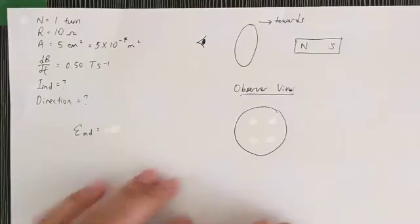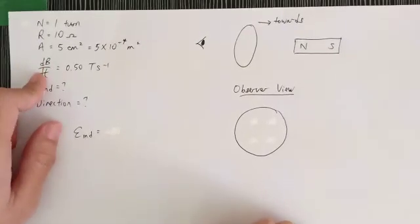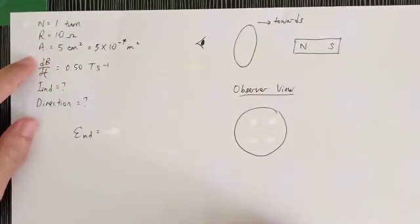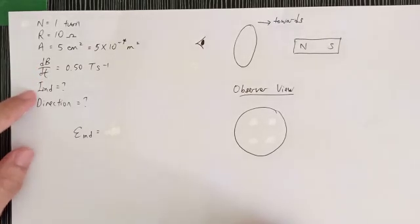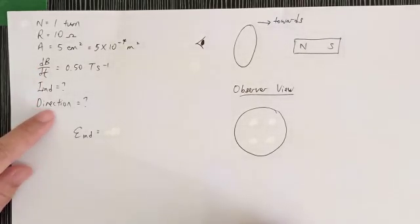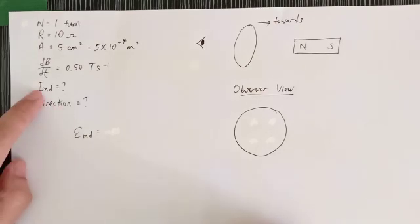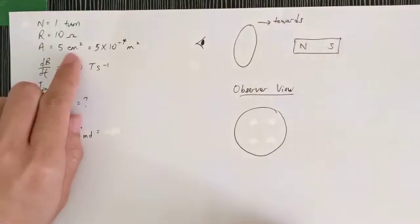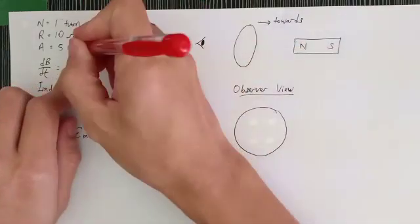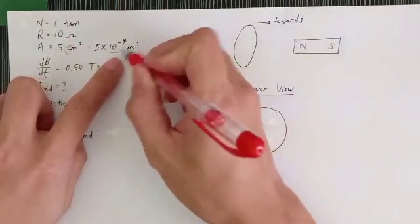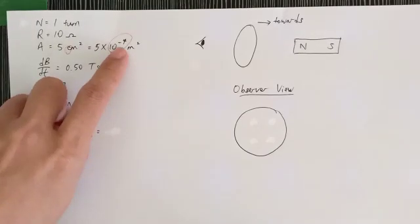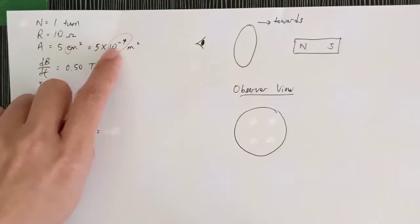The given information includes the number of turns, resistance, area, and rate of change of magnetic flux density. We need to find the induced current and its direction. Note that the area is in cm², so we need to convert to SI units: 5 cm² equals 5 × 10⁻⁴ m².